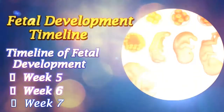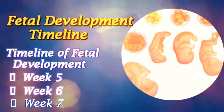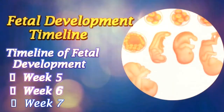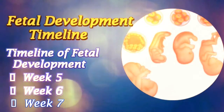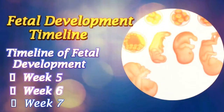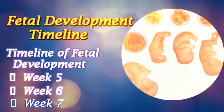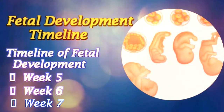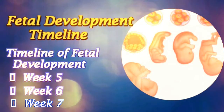Week 7: The embryo measures 8 mm in length. Lens pits and nasal pits form. The brain divides into 5 vesicles and leg buds are also seen. Rudimentary blood moves through primitive vessels.